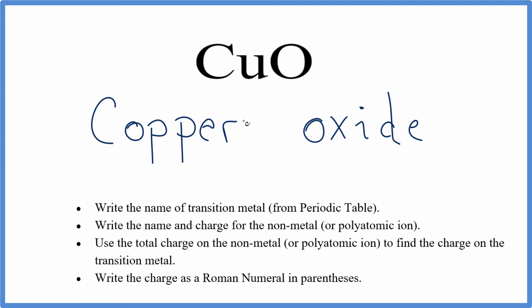So at this point, we have the name Copper Oxide. Copper is in the middle of the periodic table, and it's what we call a transition metal. Because of that, we have to be very specific about writing its charge, because copper can have several different charges.